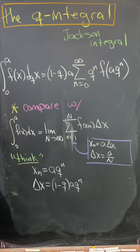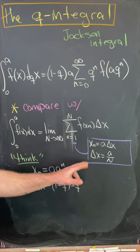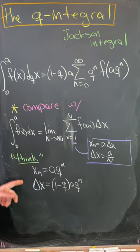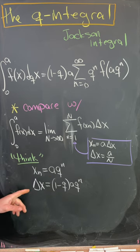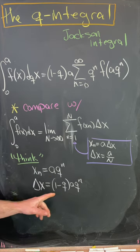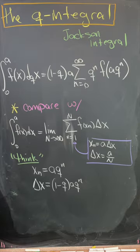Let's compare this to the normal definition of the integral via a limit of Riemann sums. Here we've got x_n and delta x. Well, here we want to think that the role of x_n up here is being played by a times q to the n, and the role of delta x is being played by (1 - q) times a q to the n.